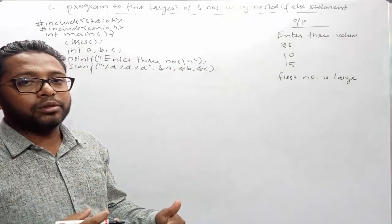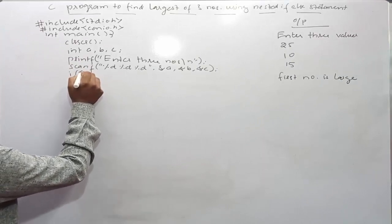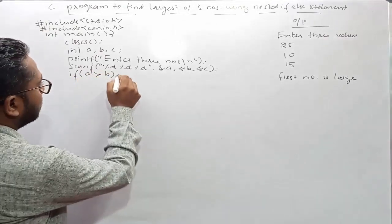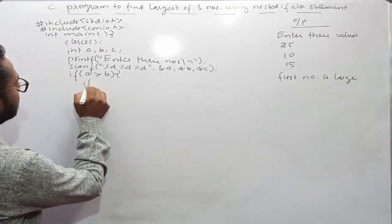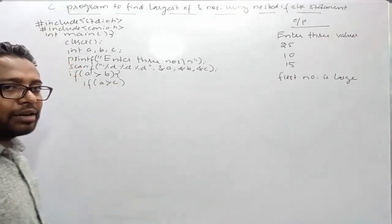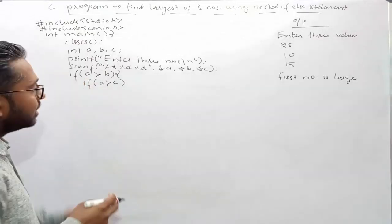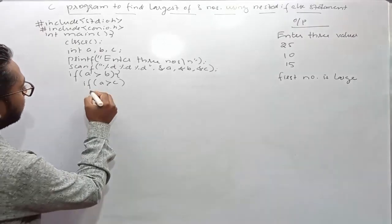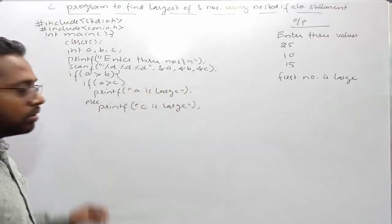Now I need to compare these three values using nested if-else statement. I will start with the initial if statement: if a is greater than b, then again I will make one more condition to check whether a is greater than c or not. In these first two if statements I am checking whether a is greater than b and a is greater than c. If both conditions are satisfied, then the output will be that a is the largest.